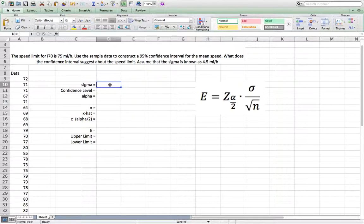So let us first list what we know. We know sigma, which is population standard deviation equal 4.5. We know the confidence level, which is 0.95, because he asks you to construct a 95 percent confidence interval.